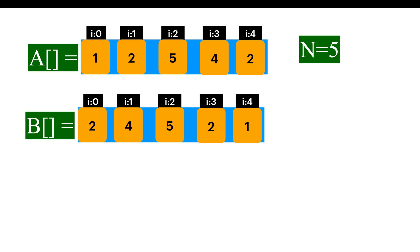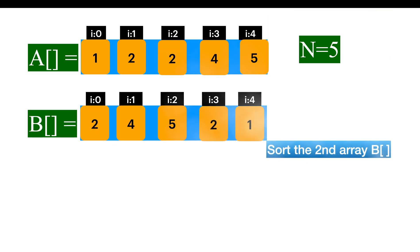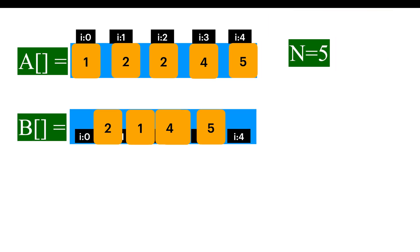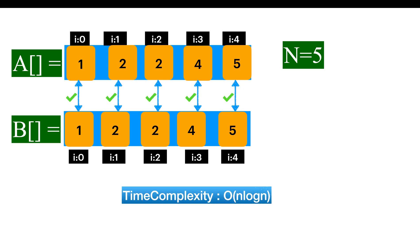One simplest solution will be: sort the first array, sort the second array, compare the indexes. If all the values are equal, we can consider them as equal, otherwise not equal. The time complexity will be O(n log n) as we are sorting the arrays.